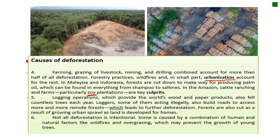Paragraph 5: logging operations — logging meaning cutting down trees — which provide the world's wood and paper products, also fell — cut — countless trees each year. Loggers, those who cut wood, some of them acting illegally, also build roads to access more and more remote forests, which leads to further deforestation. Forests are also cut as a result of growing urban sprawl as land is developed for homes, like the case of Al-Hosh and many other countryside areas in Lebanon.